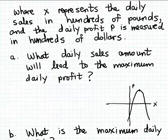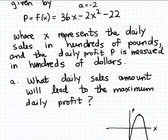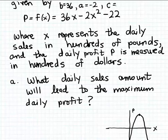So this applied example is really just asking us to find the vertex of a quadratic function. Let's apply the vertex formula. To use it, we need the coefficients: the leading coefficient a is −2, the coefficient b of the x-to-the-first-power term is 36, and the constant coefficient c is −2.